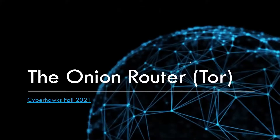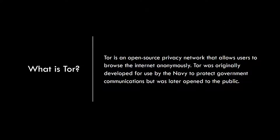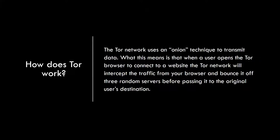The onion router, or Tor, is an open source privacy network that allows users to browse the internet anonymously. It was originally made for the Navy to protect government communications but is now open to public use. Tor works using something known as an onion technique to transmit data.